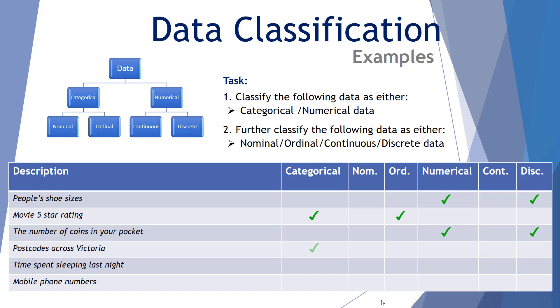The postcodes across Victoria. That's categorical. Whilst they use numbers, because the postcodes represent a label or a region, that is categorical. Postcodes also represent nominal data. There's not a specific order. Five, time spent sleeping last night. That's numerical. We can measure the time you sleep to the hour, to the nearest minute, to the nearest second, to the nearest millisecond and so forth. So it's continuous. There's a range of infinite possible durations of sleep.